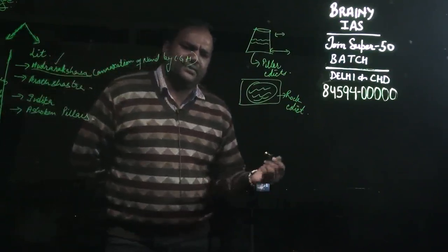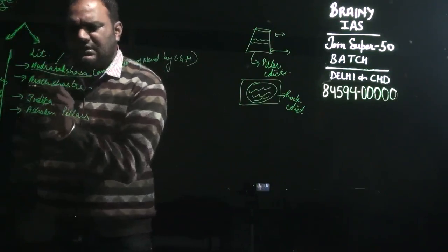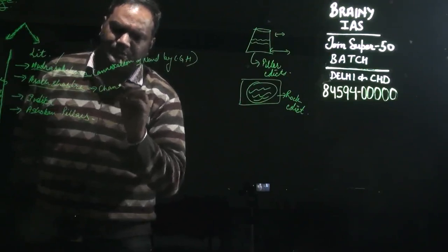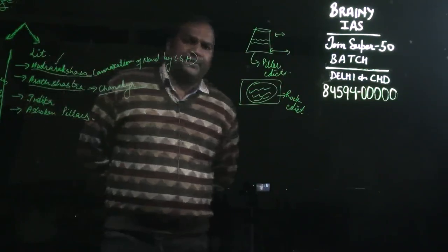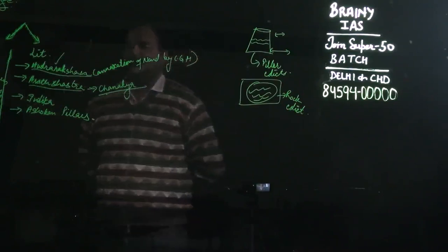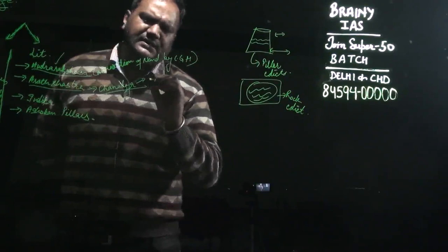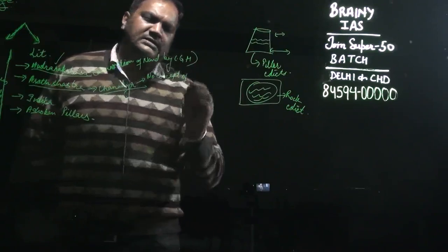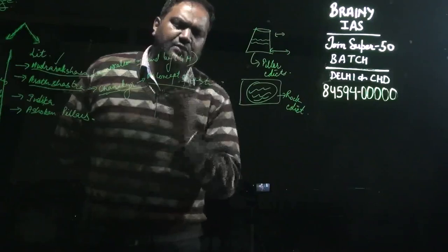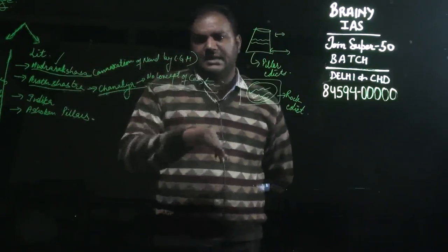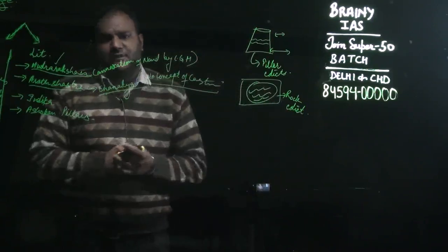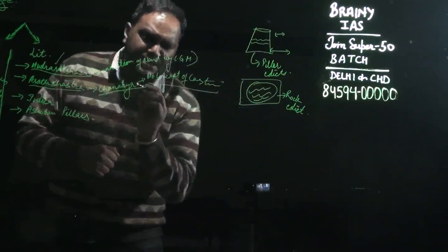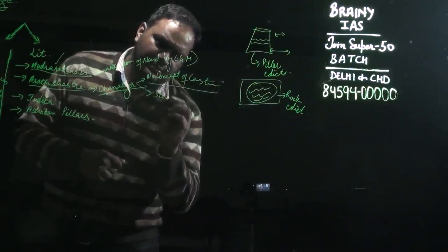Mudrarakshasa also contains information about the early life of Kautilya — his native place and other details. The second literary source is Arthashastra, a book written by Kautilya or Chanakya, the administrator of Chandragupta Maurya. One key thing about Arthashastra is that there is no concept of casteism in it. Though Chanakya appears to be a Brahmin, he never mentioned caste in his pragmatic approach.